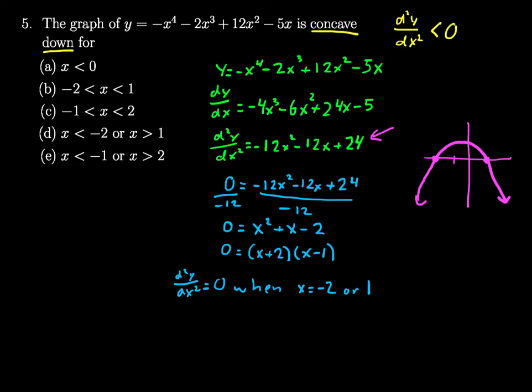when I am less than negative 2, my second derivative is negative below the x-axis. So I have x is less than negative 2. Or when I'm greater than positive 1, you can see that curve is under the x-axis. So I have or x is greater than 1. So my answer here should be d, x is less than negative 2, or x is greater than 1.